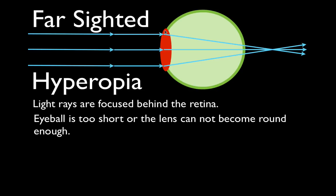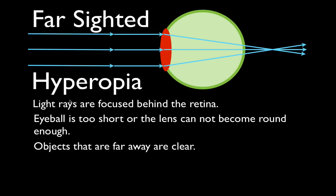There are muscles attached to the lens in your eye. Those muscles can actually change the shape of the lens. In the case of farsightedness, you would want the lens to be more round to shorten the focal length and bring the focal point forward, but your eye can't do that. This ability of the lens to change shape is called accommodation.